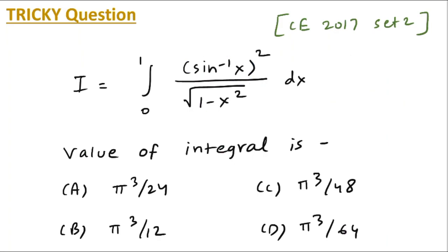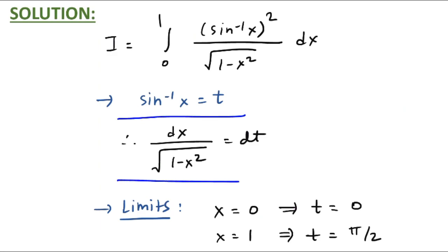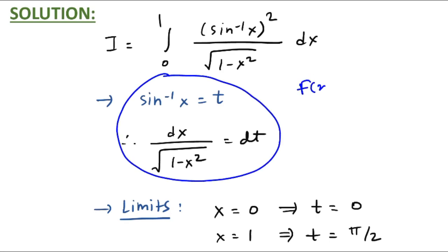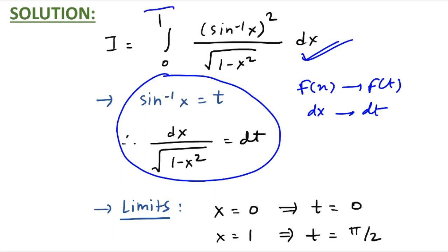If you substitute sine inverse x equal to t, then dx upon root(1 minus x squared) equals dt, which means the dx and root part are gone and become dt, and sine inverse x also becomes t. You have successfully converted f(x) to f(t) and dx to dt without any problem. But you also have to take care of the limits, which are currently for the x variable.